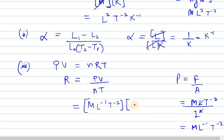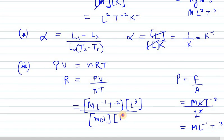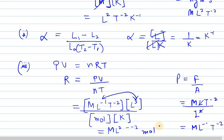Volume can be written as L³. The dimension of n is mole, and temperature is K. Combining everything, the full dimension of R is M·L²·T⁻²·mol⁻¹·K⁻¹. So this is the formula for gas constant R. Thank you for watching this video, have a great day.